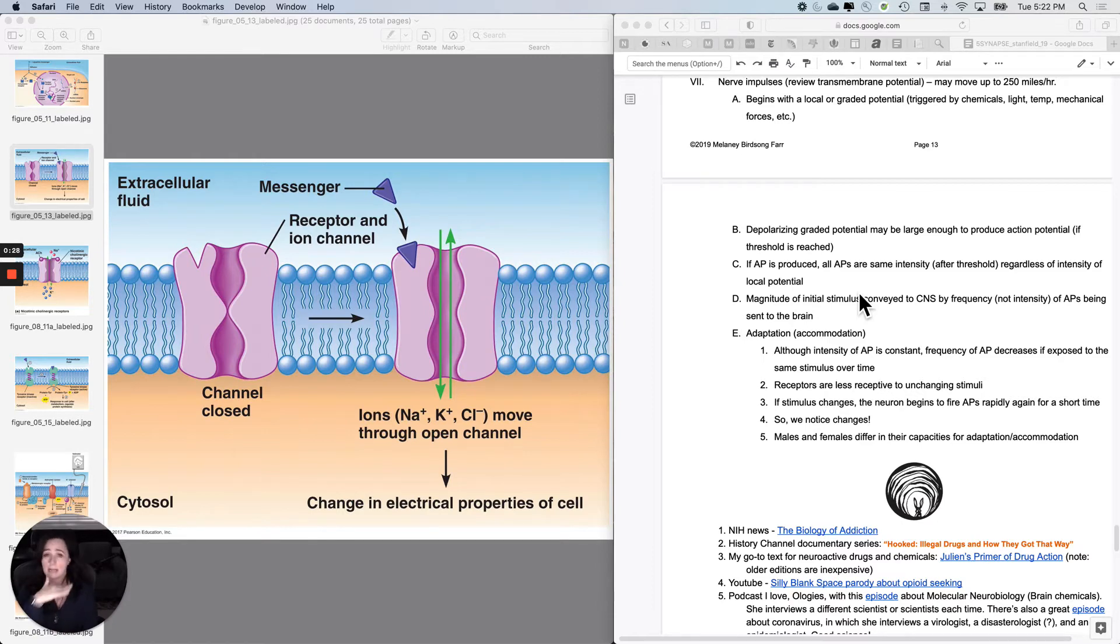And then if you're heading for an action potential, you start with a depolarizing graded potential. If it hits threshold, then you get an action potential. And so in a cell, one action potential is like every other action potential because you open all the voltage-gated ion channels.